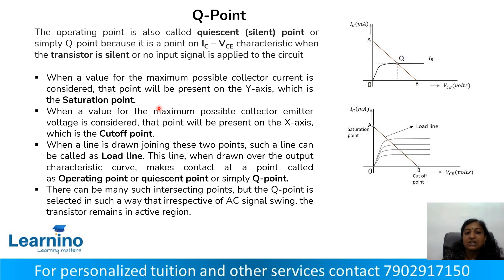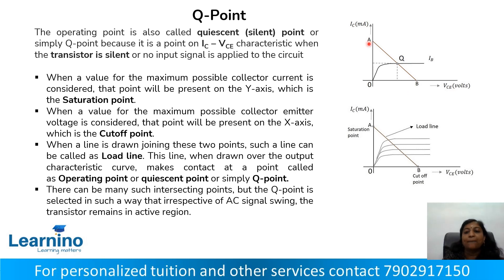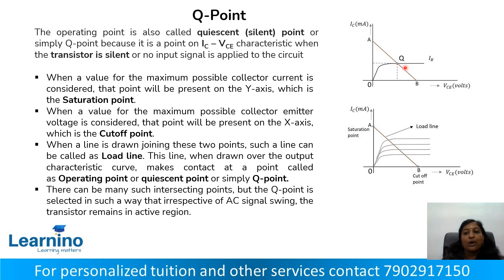The saturation point is where the maximum possible collector current occurs. The cut-off point is where the maximum possible collector-emitter voltage occurs, located on the X-axis. The line joining point A and point B is called the load line — the line drawn joining the saturation point and the cut-off point.